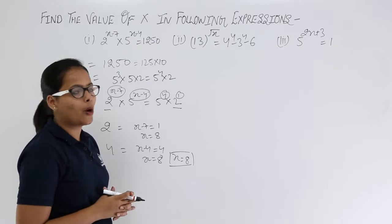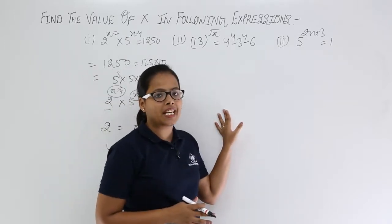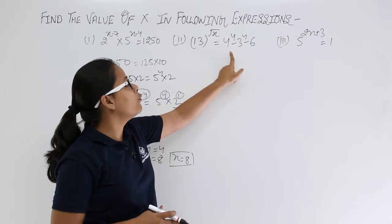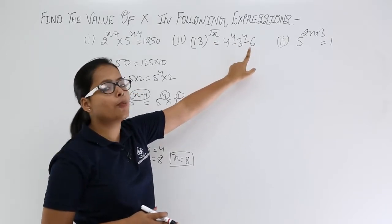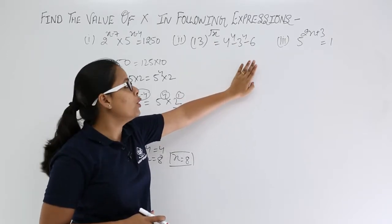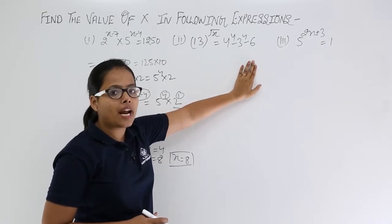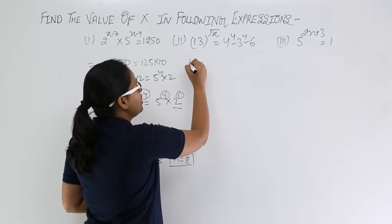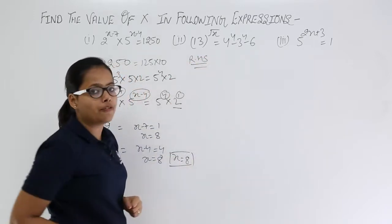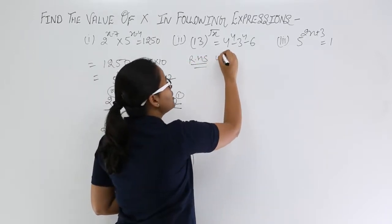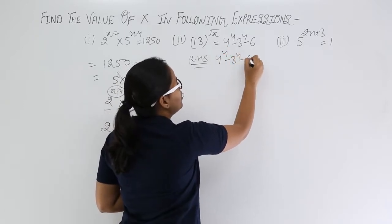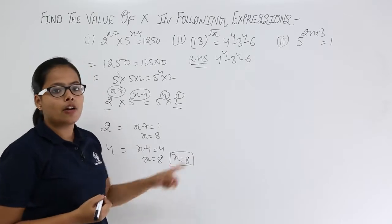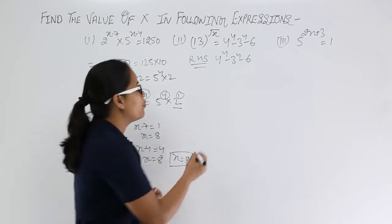I hope there is no doubt here. Now let's move on to the second problem: 13 raised to power √x equals 4 raised to power 4, minus 3 raised to power 4, minus 6. You will solve the right hand side first and then compare it with the left hand side expression. Let's start solving the right hand side: 4 raised to power 4 minus 3 raised to power 4 minus 6.